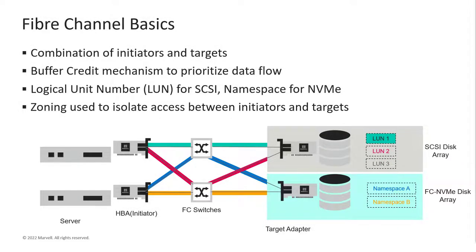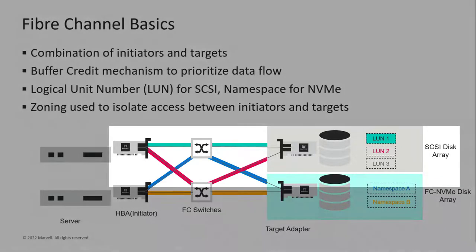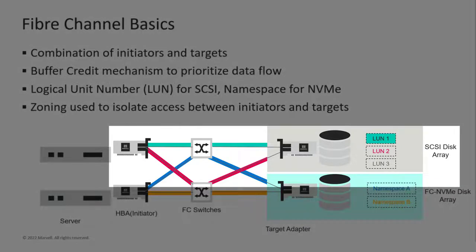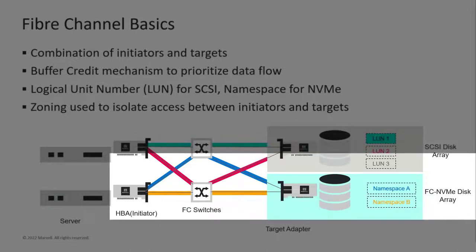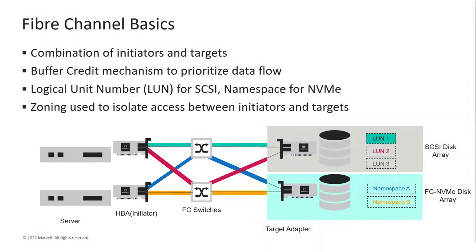In this simple diagram, we can see that the top server is communicating to the SCSI array in two zones — the red and the green. The bottom server is communicating with the FC NVMe array using the blue and orange zones. Zoning provides isolation between the different storage partitions. And because the Fibre Channel SAN is isolated from the server network, it's air-gapped, making it very secure from potential intrusion.